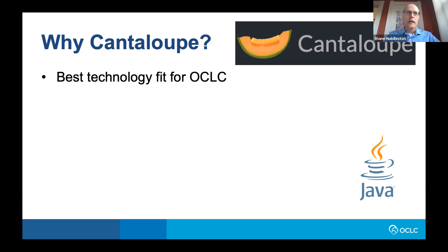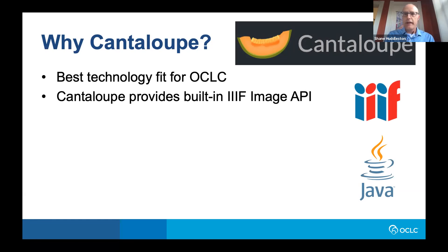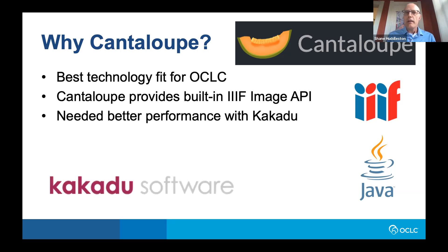In ContentDM, we store all image derivatives as JPEG 2000 files. Cantaloupe has built-in support for IIIF image API and includes both versions 2 and 3. We did do some evaluation of open JPEG implementations in Cantaloupe, but we found there were some performance problems and memory management issues that were solved by Kakadu — that's a licensed extension to Cantaloupe. We've noticed some recent improvements to open JPEG that we're keeping our eye on, but so far we're pretty happy with Kakadu.